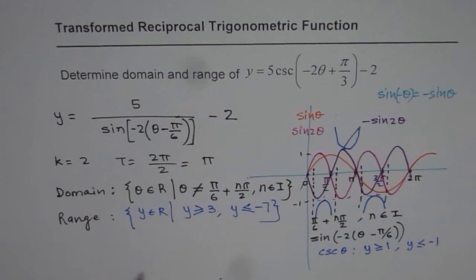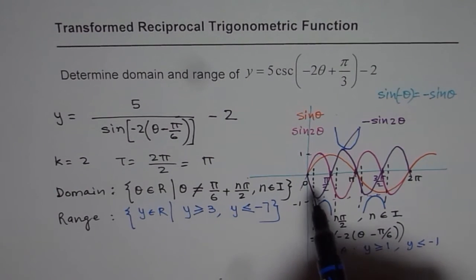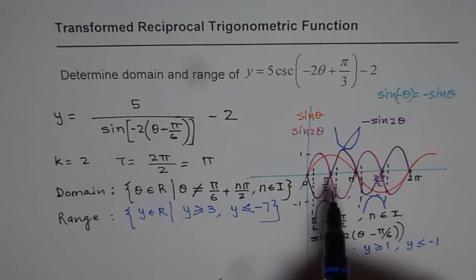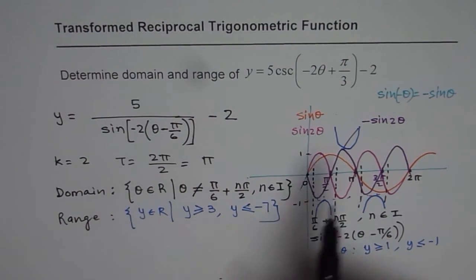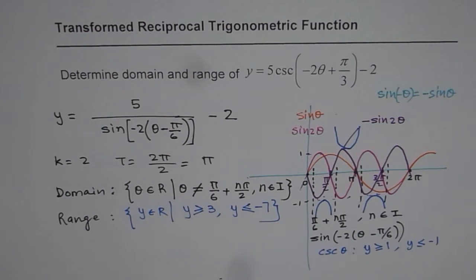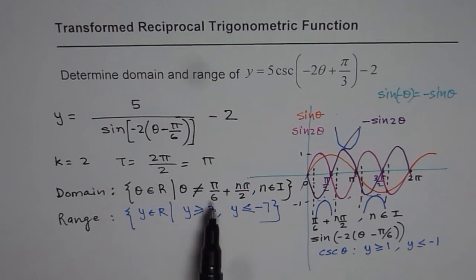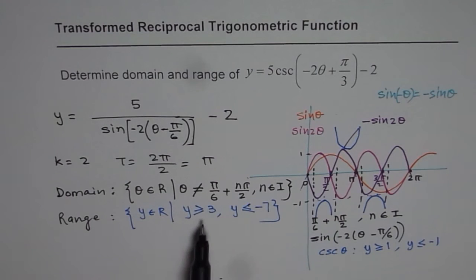I would like you to go through this video once again and try to understand the whole concept. The only thing I have not drawn here is the final shifted wave, which I will do in the next video. The domain does not include pi by 6 plus n times pi by 2, and the range is y greater than or equal to 3 and y less than or equal to minus 7. I hope that helps. Thank you.